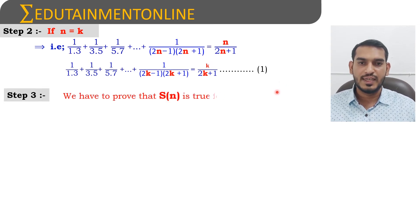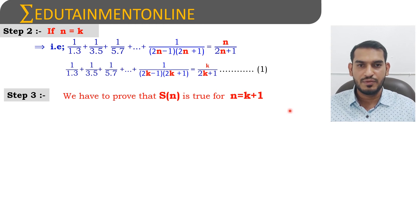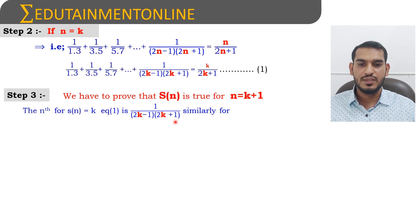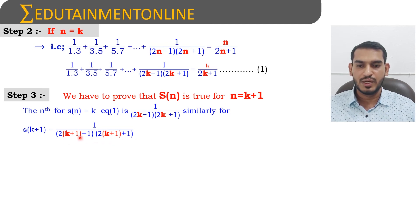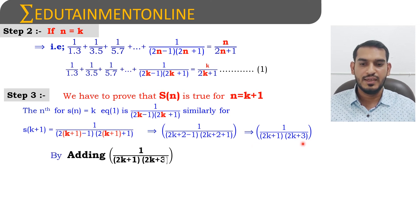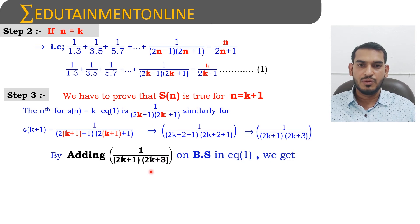Now we have to prove that S(n) is true for n=k+1. For that we add the (k+1)th term on both sides of the equation. We find the (k+1)th term by substituting k+1 in place of k in the nth term 1/[(2k−1)(2k+1)], giving 1/[(2(k+1)−1)(2(k+1)+1)]. Expanding: 2k+2−1 = 2k+1 and 2k+2+1 = 2k+3. So the (k+1)th term is 1/[(2k+1)(2k+3)]. Adding this to both sides of the equation: